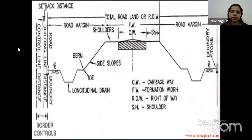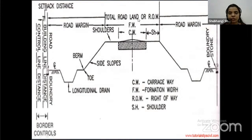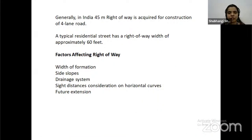From the diagram of the roadway, from one shoulder end to the opposite side of the shoulder, the total length is known as the right-of-way. The right-of-way includes the carriageway. The upper part is called the camber. The shoulder is where, in an emergency, a vehicle has to be stopped. Factors affecting right-of-way: width of formation, side slope, drainage system, side distances, situations on horizontal curves, and future extension.